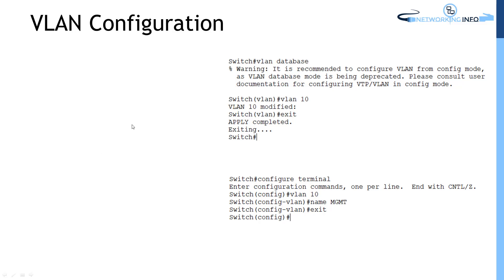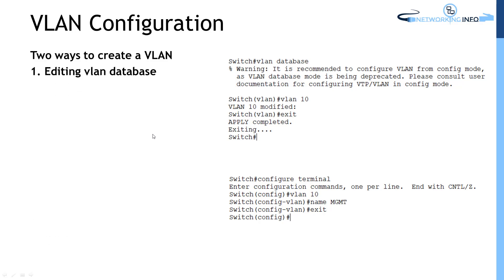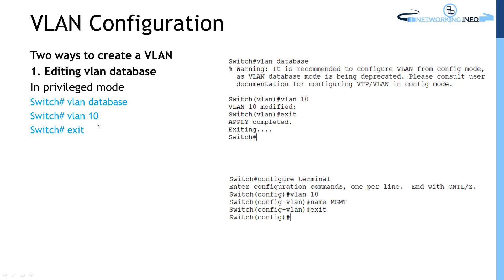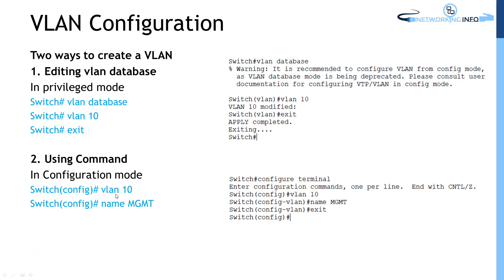In this slide we are going to talk about VLAN configuration methods. The first method is editing the VLAN database and the second method is using commands in configuration mode. You can directly add VLANs into the VLAN database, and you can also use configuration mode by typing the VLAN ID and name, then exiting.